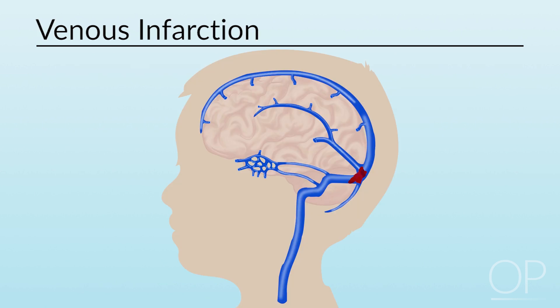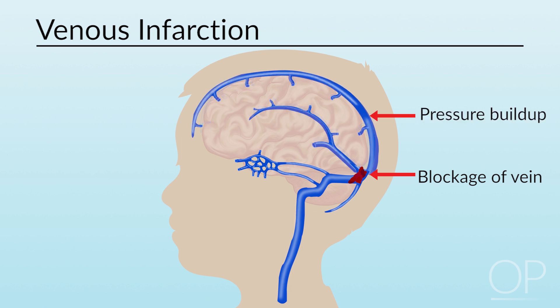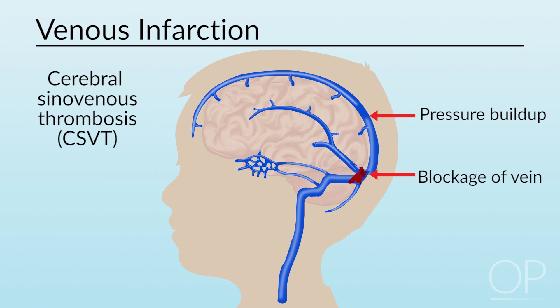Ischemic stroke resulting from the blockage of a vein is called venous infarction. The loss of venous drainage leads to pressure buildup and therefore tissue damage. This is one possible result of a cerebral sinovenous thrombosis, or CSVT, when a clot forms within the draining sinuses of the brain.